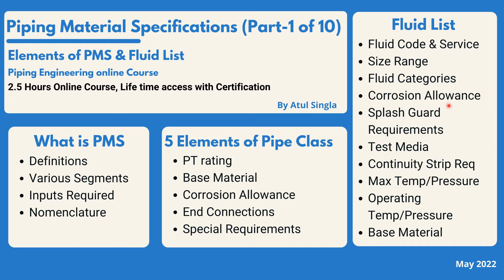We will also look into corrosion allowance in more detail — how it is calculated, how it is associated with any project, piping system, equipment, or project life. We will look into the basic chemistry behind corrosion allowance calculation, Faraday's laws, corrosion current, corrosion density, splash guard requirements, test media, continuity strip requirements, and maximum temperature and pressure operating conditions.